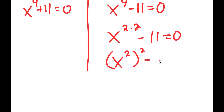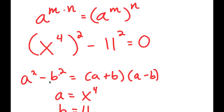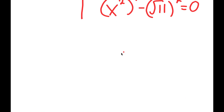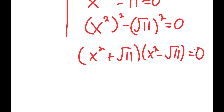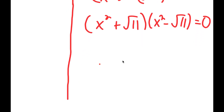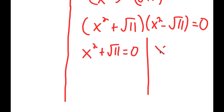And 11, I'm going to rewrite as the square root of 11 squared. So now I can use this difference of squares property again. I get x squared plus the square root of 11, times x squared minus the square root of 11, is equal to zero. And again I get two equations: x squared plus the square root of 11 is equal to zero, and x squared minus the square root of 11 is equal to zero.